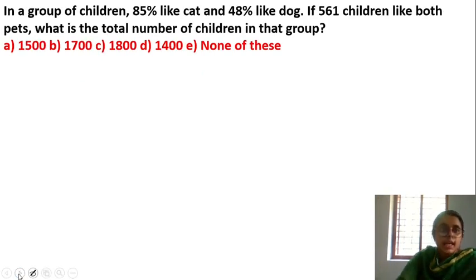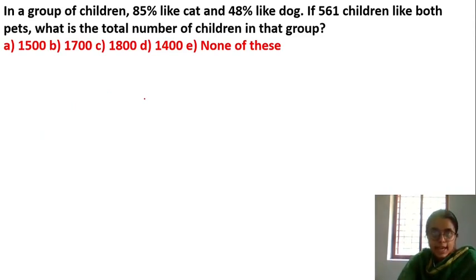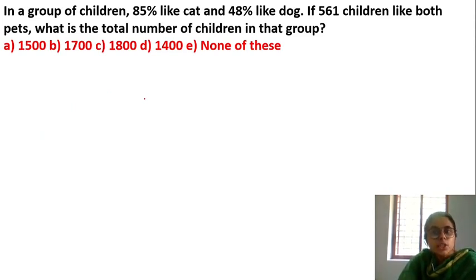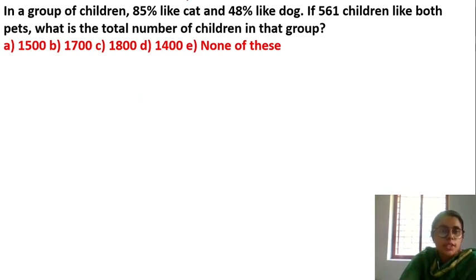Next question: In a group of children, 85% like cat and 48% like dog. If 561 children like both pets, what is the total number of children in that group?